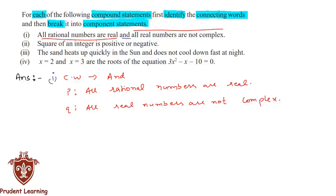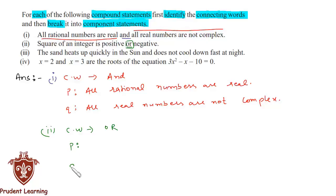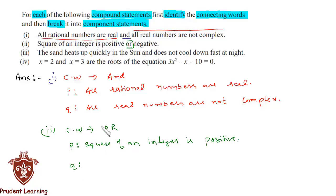In the second section, the given compound statement is: 'Square of an integer is positive or negative.' The connecting word is 'or'. The first component statement P is: 'Square of an integer is positive,' and the second component statement Q is: 'Square of an integer is negative.'